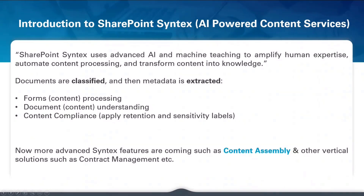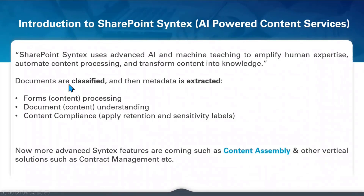The idea is you use Syntex to create an AI model, and there are two main concepts for the model. So documents are classified — your model is trained to target a particular type of document. You set your model to pick out invoices, statements of work, or contracts, for example. And then within that model, you set it to extract metadata, so you create rules to extract, say for a contract, a contract ID, contractor amount, who the contract is to, or their date, for example.